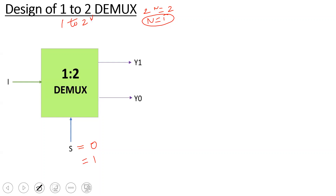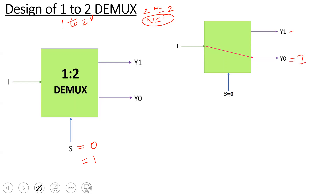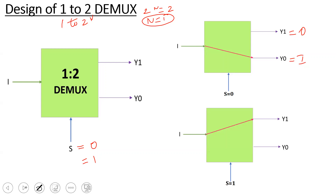With input I, we can see how the output is carried out. If S equals 0, the input is connected to Y0. It acts like a switch: if S equals 0, Y0 equals I and Y1 equals 0. If S equals 1, the input is connected to Y1, so Y1 equals I and Y0 equals 0.